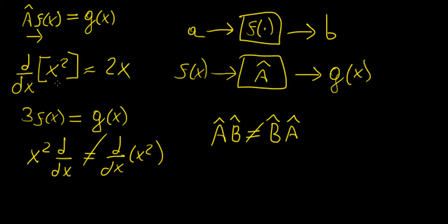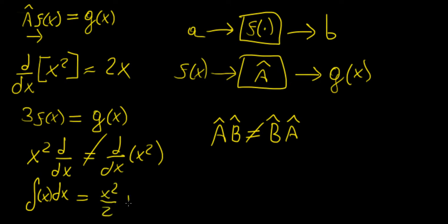Another example of a mathematical operator is the integral operator, because if we take some function like x, this is going to give us another function — in this case x squared over 2 plus some constant c. So this is another example of an operator.